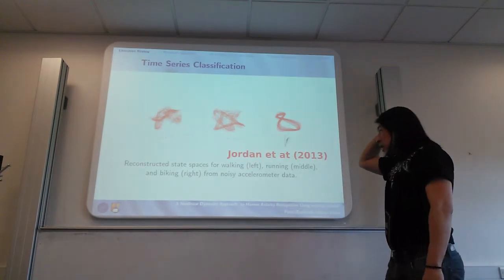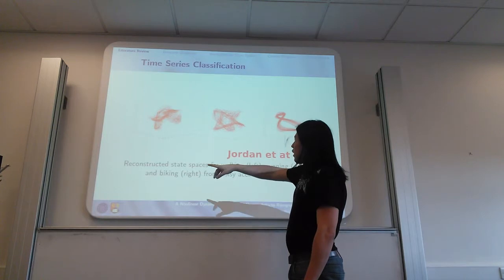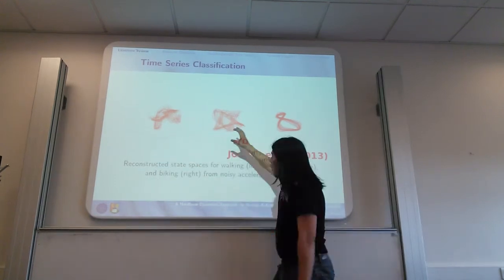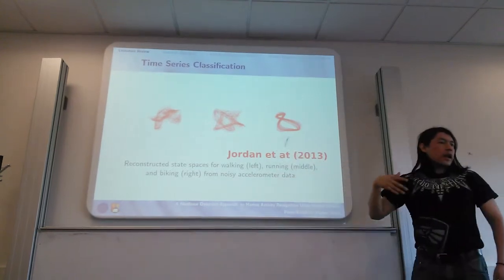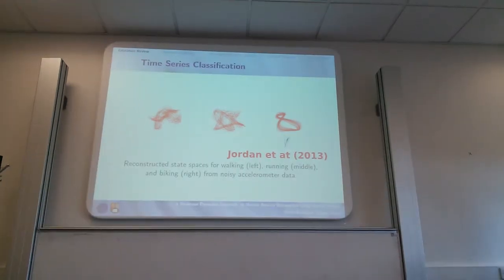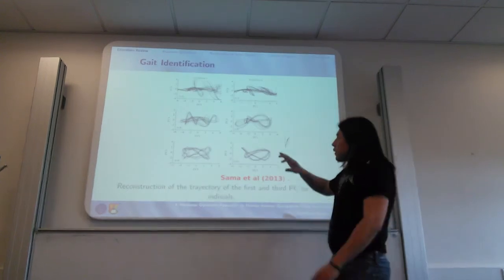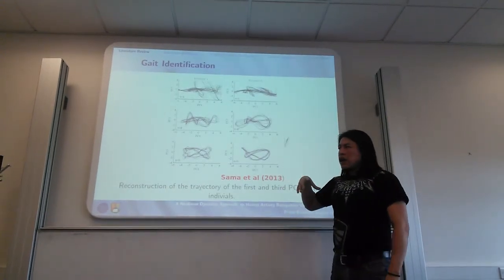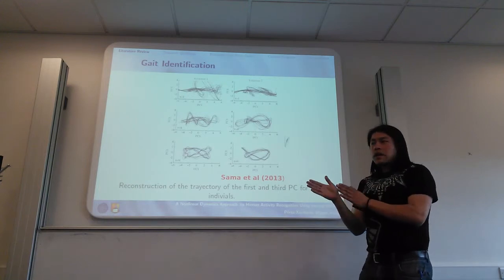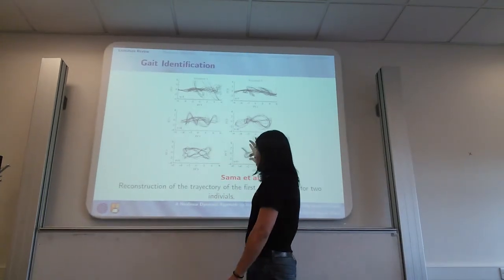Another researcher is working with this time series reconstruction, and by collecting data from an accelerometer, he can obtain different patterns for walking, running, or cycling, and he applied different machine learning algorithms to classify the activities. Another application of this method of time delays is identification. Sama and others collect data from many participants to identify different volunteers, and as you can see there are different formations in this state space.